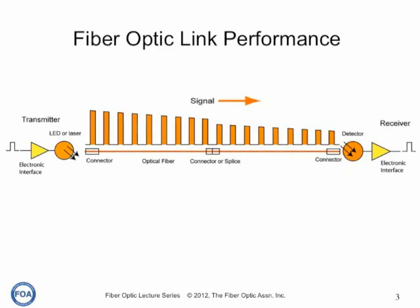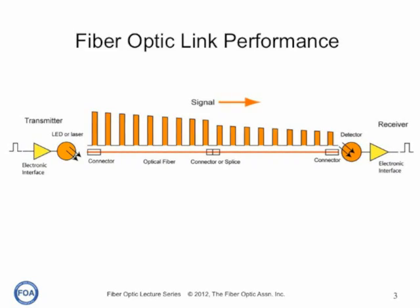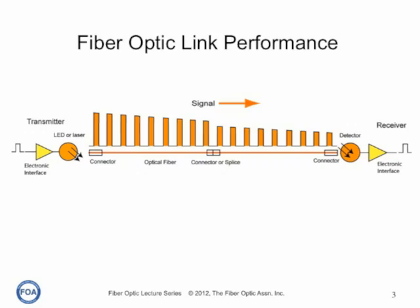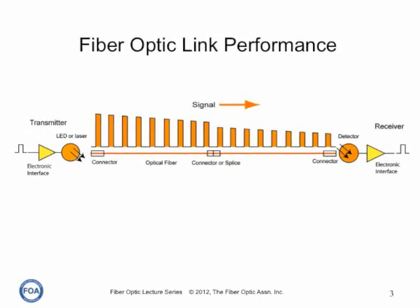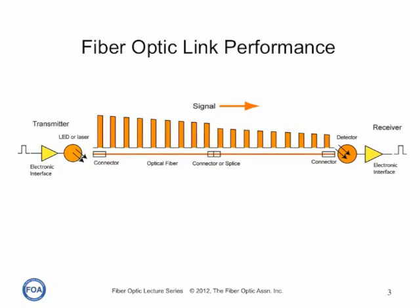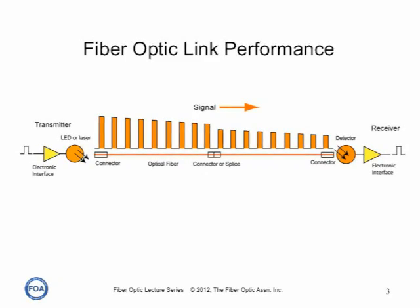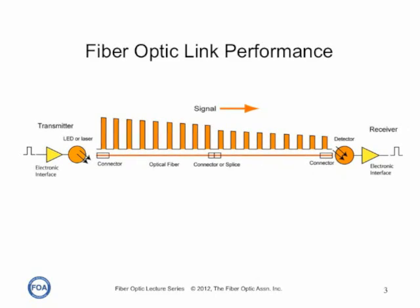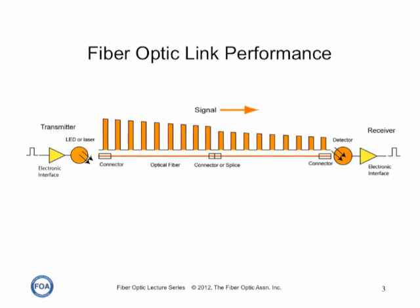A fiber optic link uses an LED or laser transmitter to convert an electrical signal to optical and couple that into an optical fiber. The optical fiber transmits the signal to the receiver. Along the way, the optical fiber attenuates the signal, and any connector or splice in the link will add loss. So the power at the receiver is determined by how much power you put in with the transmitter and how much is lost in the cable plant.